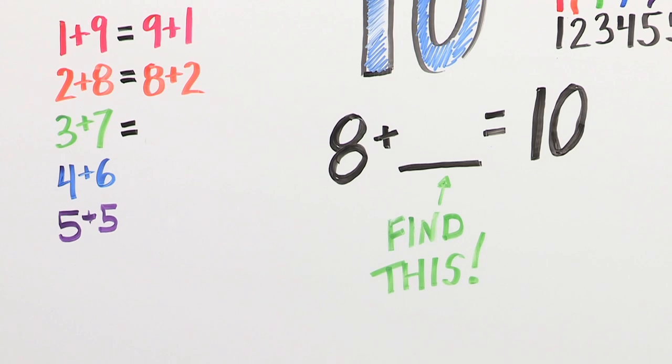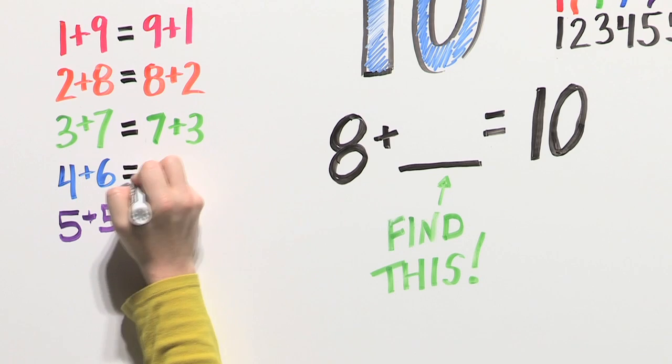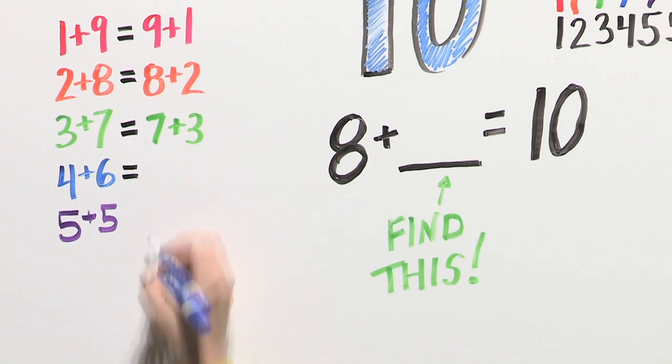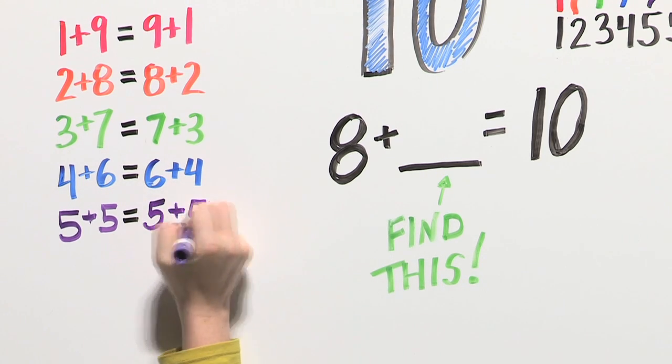3 plus 7 equals 7 plus 3. 4 plus 6 equals 6 plus 4. 5 plus 5 equals 5 plus 5.